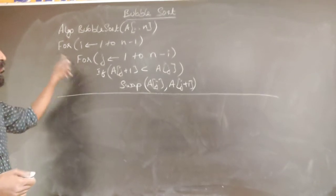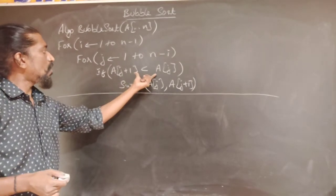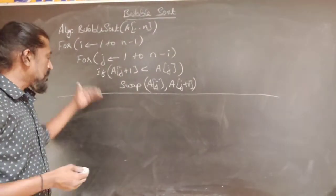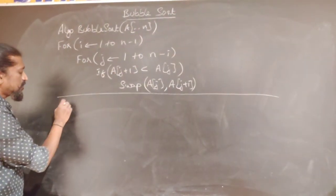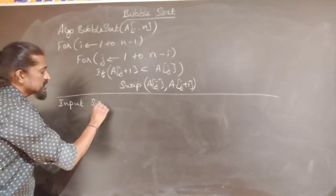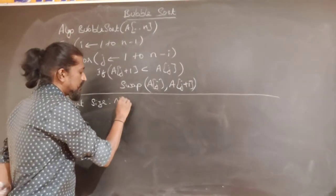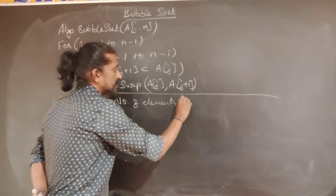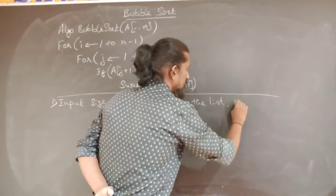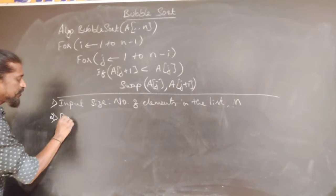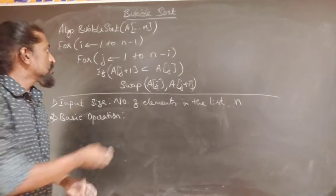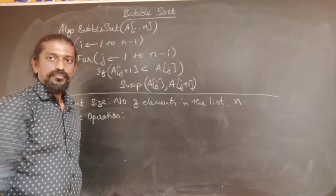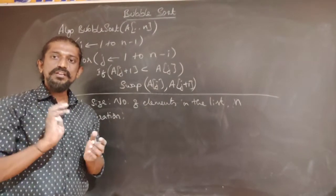Now we will analyze the efficiency of bubble sort, and see how to analyze a non-recursive algorithm with nested loops. The first step is identifying the input size, which is the number of elements n in the list. The second step is identifying the basic operation. Inside the two for loops there are two operations: the comparison and the swap. The swap is performed only depending on the result of the comparison.